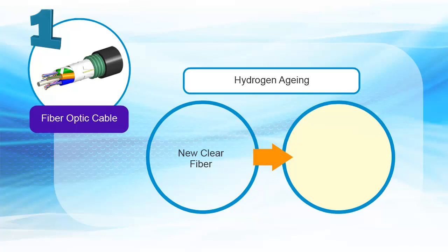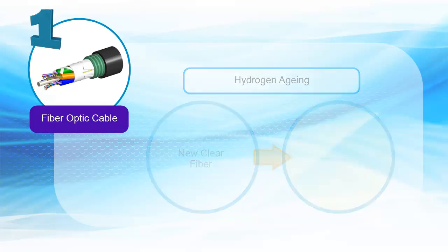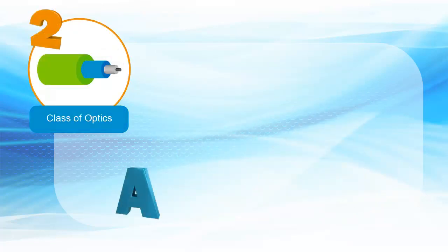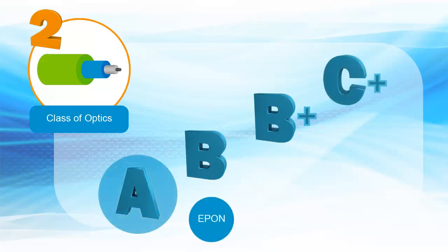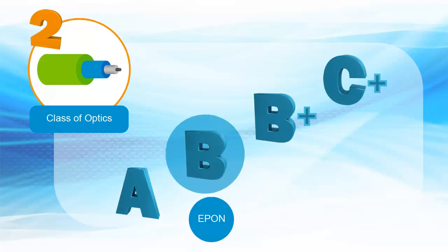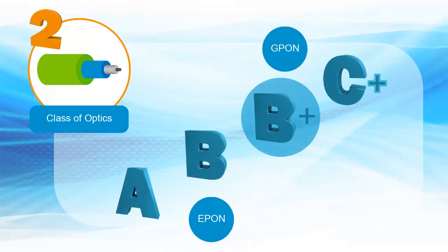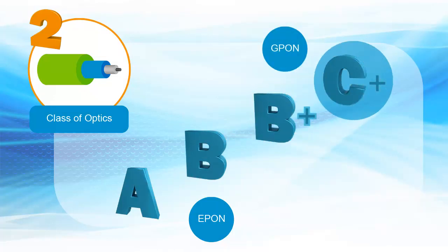Hydrogen aging is where the molecules of hydrogen atoms in the silica or glass tend to break down over time, making the fiber less clear to transport the light pulses. The second component is the class of optics. Within the standards bodies, various classes of the optics electronics are defined. E-PON has traditionally used Class A optics but has moved to Class B optics, falling within the B-PON specification of split ratios to 1 to 32 and distances of 20 kilometers. G-PON utilizes Class B plus and Class C plus optics.